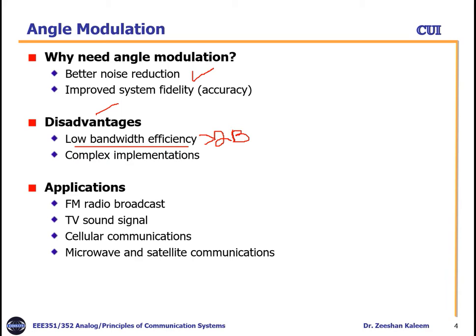Angle modulation also has complex implementations, as we will see when we implement the scheme later on. It has a large number of applications: for example, it is used in FM radio broadcast which we listen to in the car or at home. To transmit the sound signal of a TV we use FM modulation as well. In cellular communications we also use FM — frequency modulation. And there are applications in microwave and satellite communications as well.